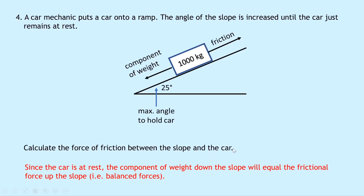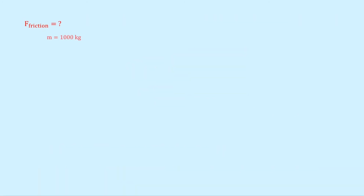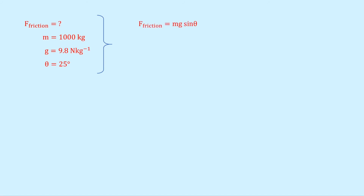To calculate the friction force, we use the fact that it equals the component of weight down the slope. We call this F_friction. Mass is 1000 kg, g is 9.8 N/kg, theta is 25 degrees. So F_friction = mg sine theta = 1000 × 9.8 × sin(25°) = 4142 newtons.